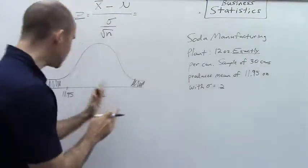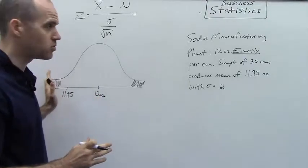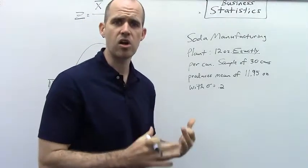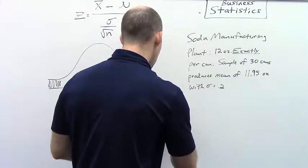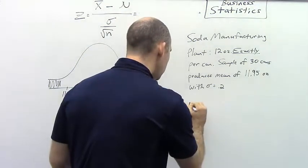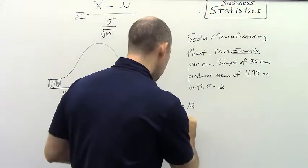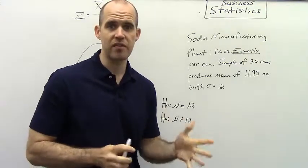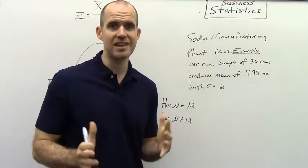The question is, is that far enough away from this original mean to put it into the rejection region where we can reject the null hypothesis? So let's write out our null and alternative hypothesis. And it's actually quite simple in a two-tailed test. Either the mean equals what they claim it equals or it doesn't. Because if it's above 12 ounces or if it's below 12 ounces, we can reject the null hypothesis. We're just trying to see is it different.